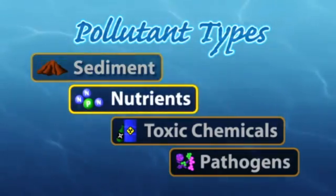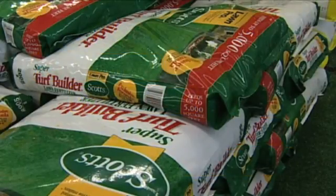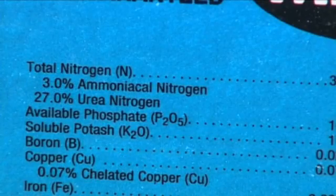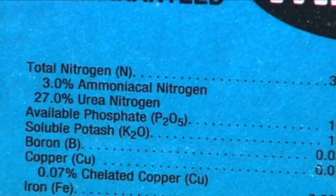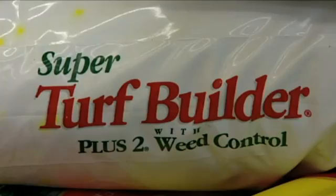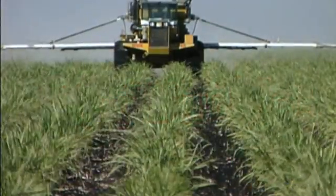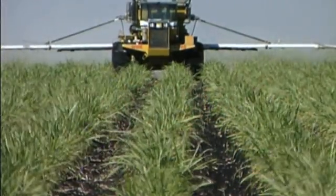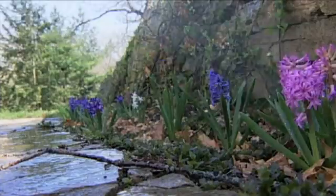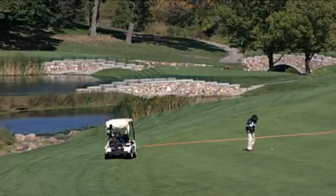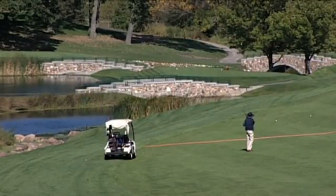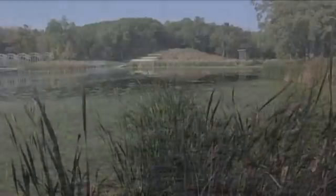Next are nutrients, which pose an entirely different problem. Nitrogen and phosphorus are natural components of manure, human sewage, and decaying organic matter like leaves. They're also present in manufactured fertilizers. Nutrients are applied to farm fields to feed crops and to backyard gardens, and they're used to green up golf courses and lawns.